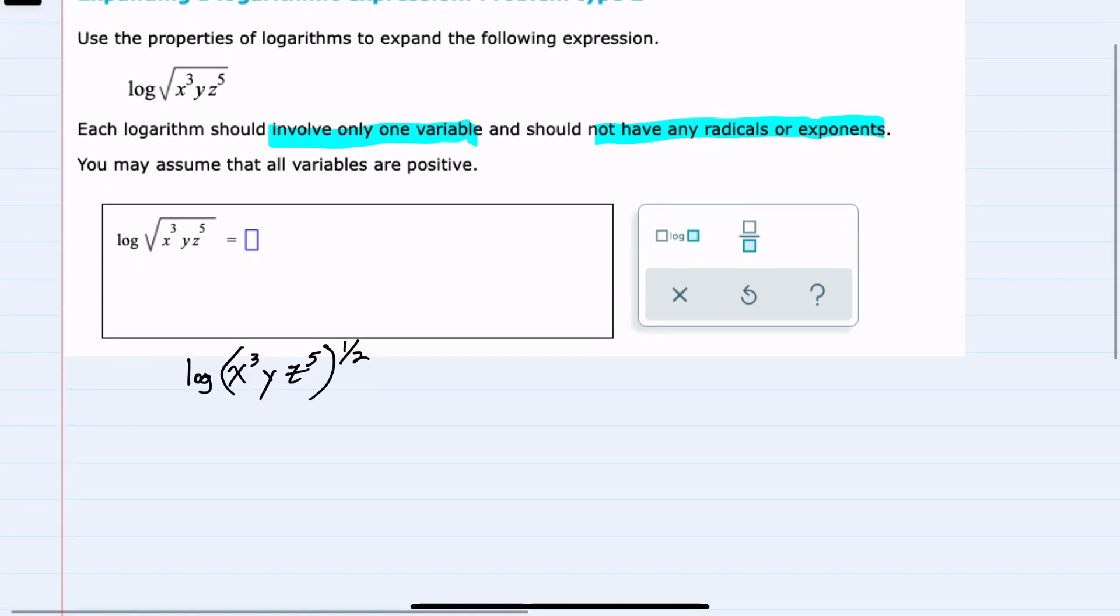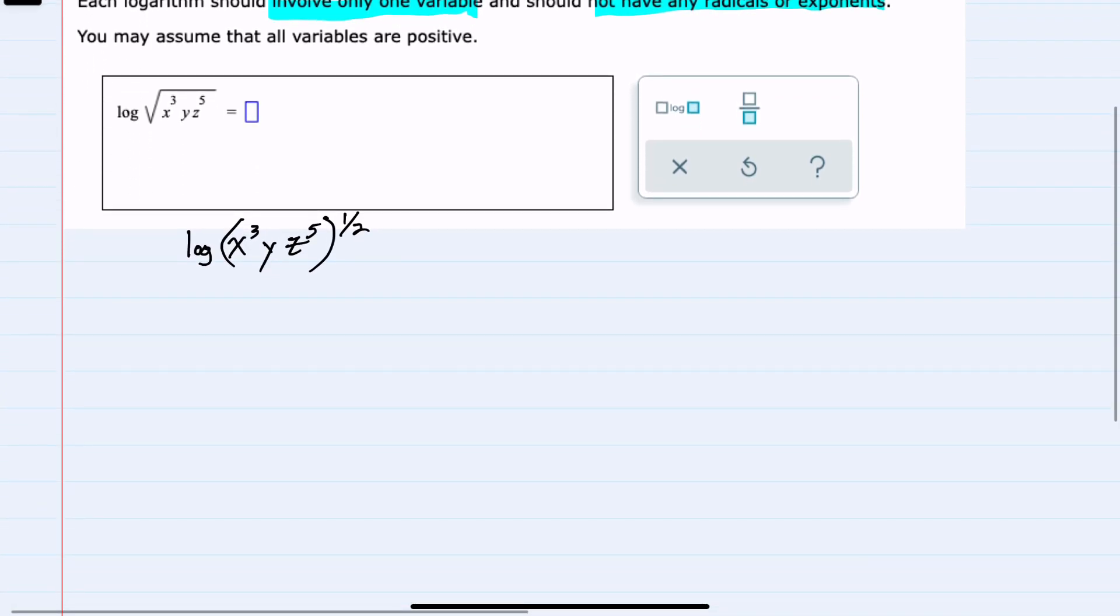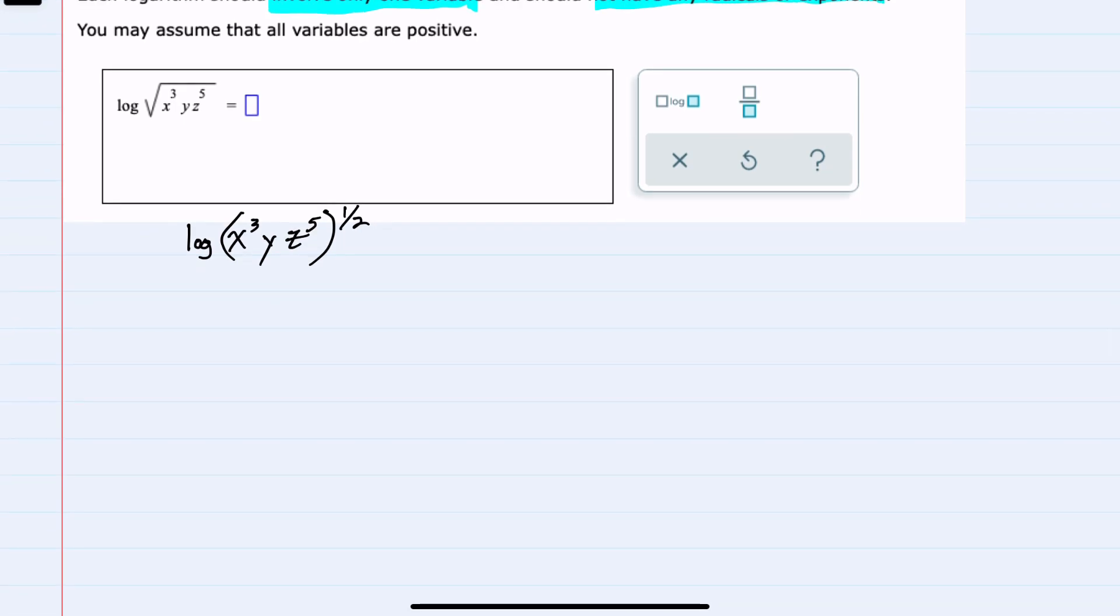I'll start by recalling that the radical can be written as an exponent of one-half. Then using the log rules for exponents, I can bring that one-half in front as a coefficient, leaving the log of x³, y, z to the fifth.